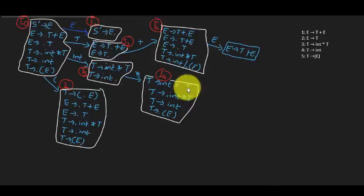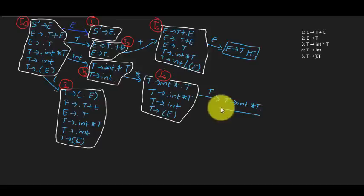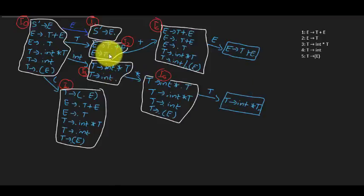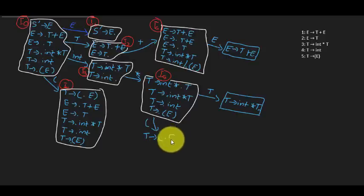Moving the dot after T in the appropriate state gives T → int*T•, so we've reached the accepting state for that rule. We've now reached accepting states for four rules. We still haven't computed the accepting state for the parenthesis rule yet.